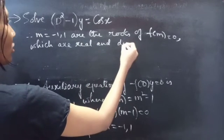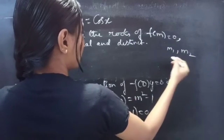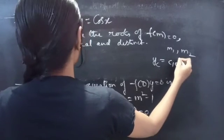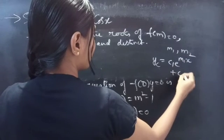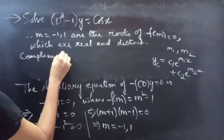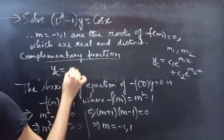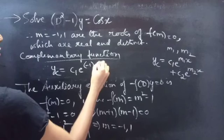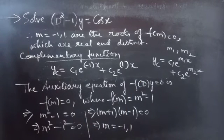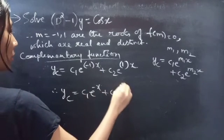The roots are real and distinct (also called real and different). When two roots m1 and m2 are real and distinct, the complementary function is written as c1·e^(m1·x) + c2·e^(m2·x). Therefore our complementary function is yc = c1·e^(−x) + c2·e^(x).